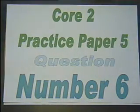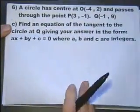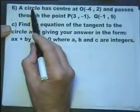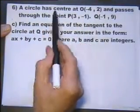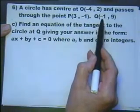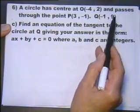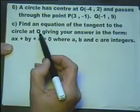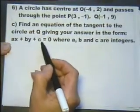Core 2, practice paper 5, question number 6, part C. So repeating up the top here, a circle has a centre at O with that coordinate and it passes through the point P. But now we've found out in part B that it also passes through this point Q as well. Find the equation of the tangent to the circle at Q, given your answer in this particular form.